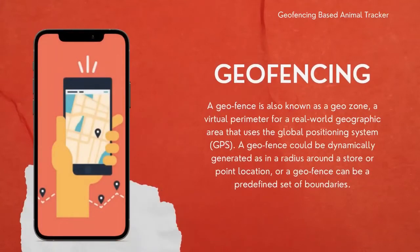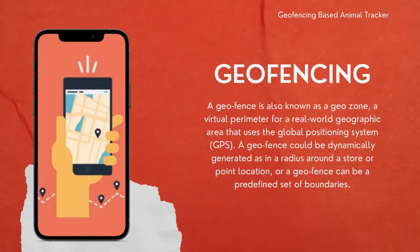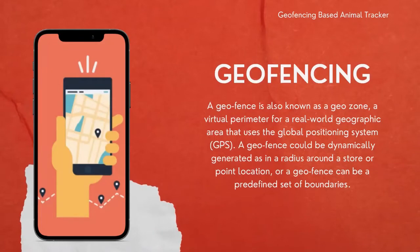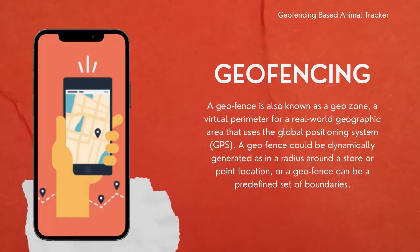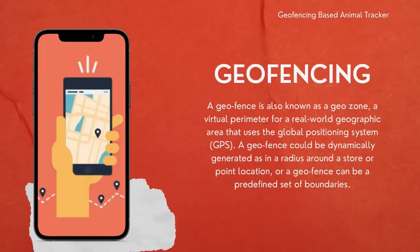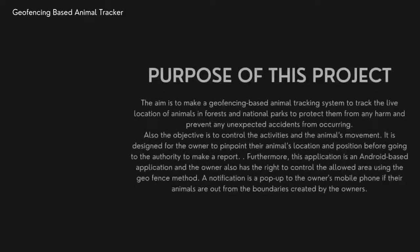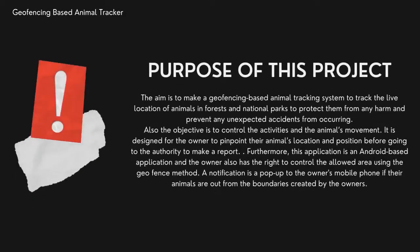We'll start with the very first and basic question that may come to mind: what is Geofencing? Geofencing, also known as Geo-Zone, is basically a virtual perimeter for a real-world geographic area that uses GPS. Geofencing is dynamically generated and can be a predefined set of boundaries.